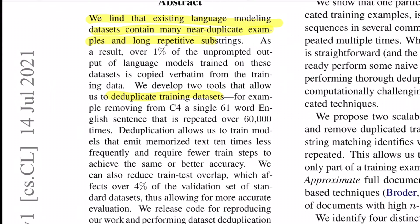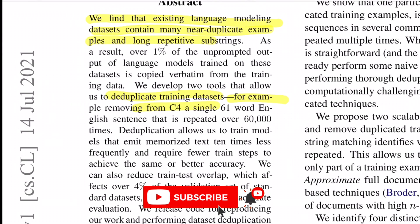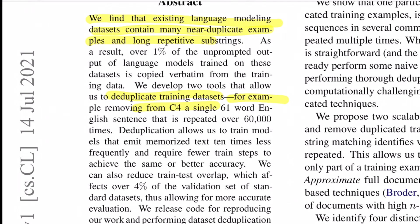For instance, the authors found that in the C4 corpus — a large-scale dataset derived from Common Crawl data, which stands for Colossal Clean Crawl Corpus and was also used to pre-train the Pegasus model — there was a 61-word English sentence that was repeated over 60,000 times in the training data. Not only that, the same sequence was also repeating almost 61 times in the validation set.